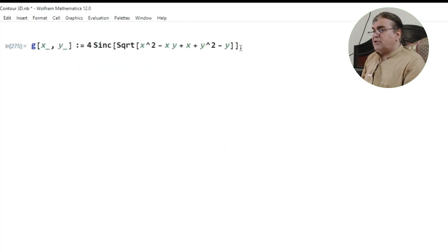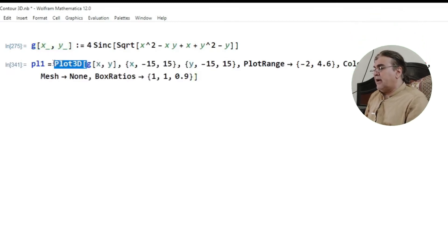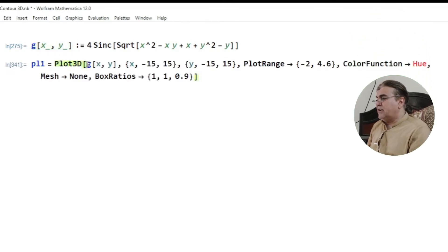So in order to achieve our goal, I first want to plot the function against x and y through the command Plot3D like I'm doing over here. I put the function inside the argument of Plot3D with x and y varying from minus 15 to 15, and then I add some other commands like PlotRange, ColorFunction Hue, Mesh None, BoxRatio, etc.